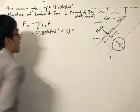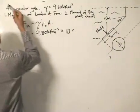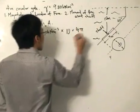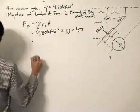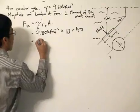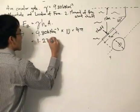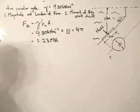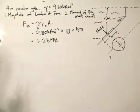The vertical height of the centroid is given as 10 meters, multiplied by the area. The area is πr², and r in this case is 2, so the area is 4π. This equals 1.23 meganewtons. That's as easy as finding the hydrostatic force — we just applied the formula.